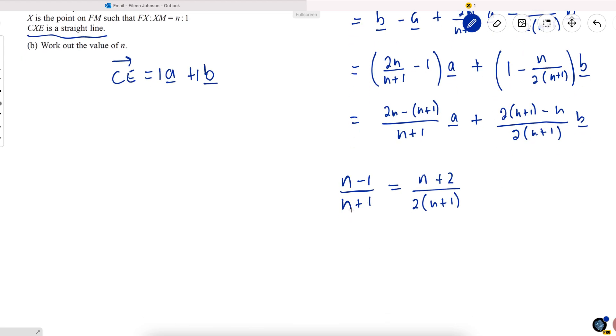Now I can multiply both sides by N plus 1 to cancel out those, and multiply both sides by 2. So, multiplying this by 2, 2N minus 2 equals N plus 2. And so N is equal to 4.